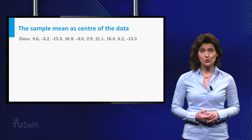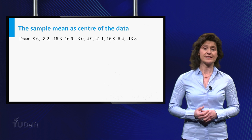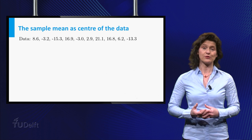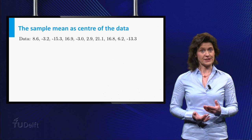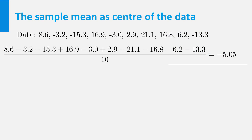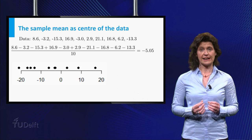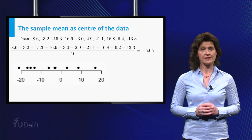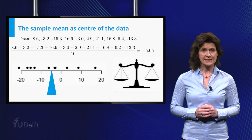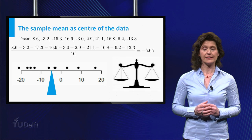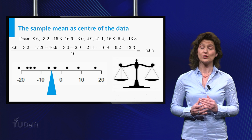The most commonly used method to describe the center of a dataset is the mean or average of the numbers. For the dataset given here, the mean is minus 5. This mean value has an interpretation in terms of balance. If you think of the points on the line as little equal masses, the mean of the data can be seen as the location on the line where the line should be supported to achieve balance.